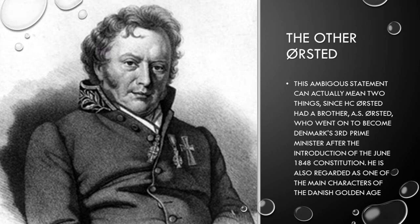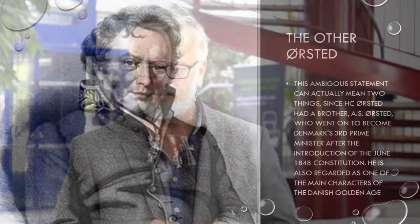But he was not the only Ørsted — there was another Ørsted. Hans Christian Ørsted had a brother, A.S. Ørsted — Anders, to be more specific. He went on to be Denmark's third prime minister after the introduction of the 1848 constitution. He was a very influential man in politics, and is regarded as one of the main characters in the Danish Golden Age.